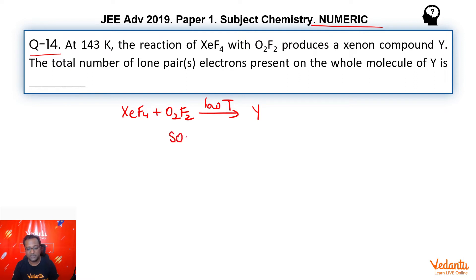O2F2 is a very strong oxidizing agent. Why? Because individual oxygen is in plus 1 oxidation state. So it will oxidize the xenon from plus 4 into plus 6 and will also fluorinate it. Xenon has oxidized from plus 4 to plus 6 oxidation state.